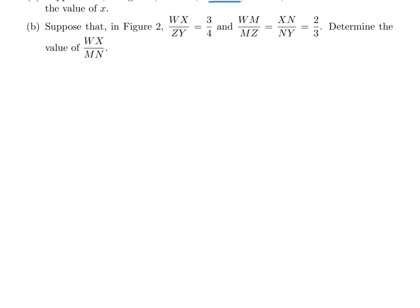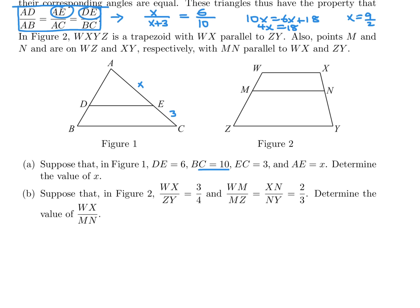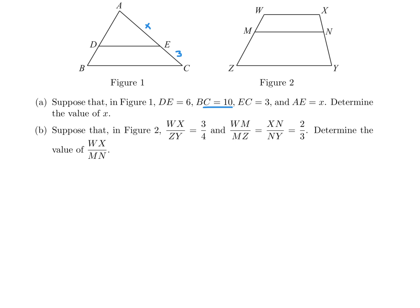Part B. Suppose that in figure 2, which is right here, maybe I'll leave figure 2 in the screen so you can see it. WX over ZY is 3 over 4, and WM over MZ equals XN over NY, which is 2 over 3. Determine the value of WX over MN. So we are given these helpful equations, and we have to find the value of this guy. Alright, so let's draw that shape, because I think I'm going to have to extend it. So that's the shape, but I'm going to extend it so that it becomes a triangle. And if it becomes a triangle, then it becomes easier. So I'll call this point P, and everything else stays the same. WX, M, N, Z, and Y.